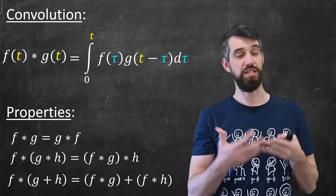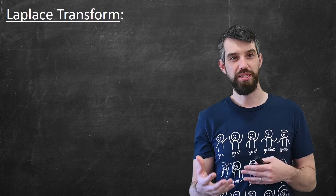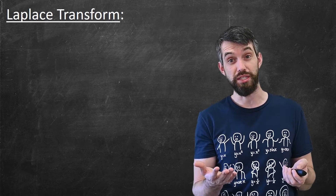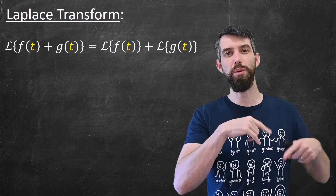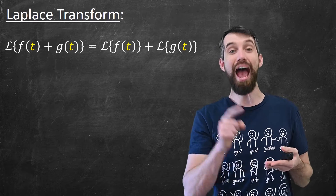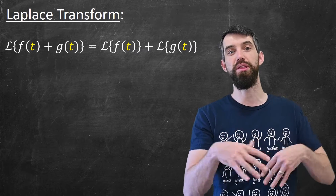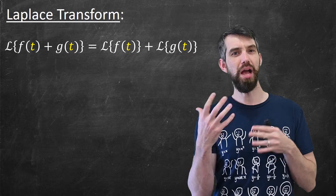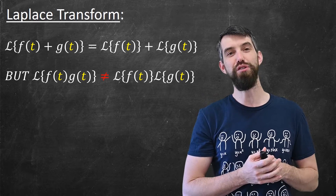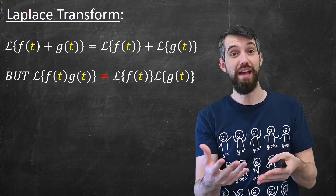The final property is, in some sense, the most important: how does convolution interact with Laplace transforms? Before talking specifically about convolution, I want to observe that Laplace transforms play nicely with addition of functions — there's this linearity property that says the Laplace transform of a sum is just the sum of two different Laplace transforms: the Laplace transform of f added to the Laplace transform of g. However, the same kind of property is definitely not true for multiplication of functions. You might have guessed that the Laplace transform of a product f times g would just be the Laplace transform of f times the Laplace transform of g, but this is not true.